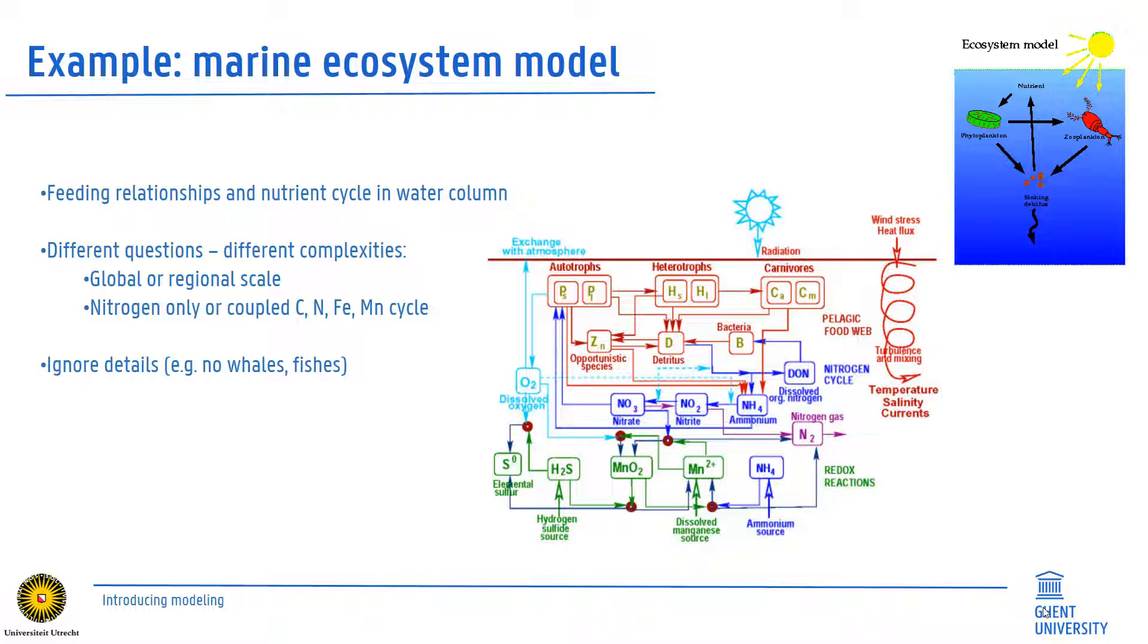Typically, as models need to remain as simple as possible, many details will be ignored. If the model is developed to understand, for instance, nitrogen fluxes, abstraction will be made of all different species of algae.